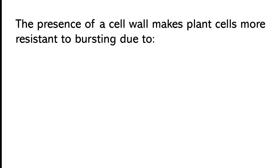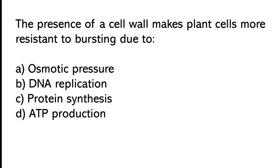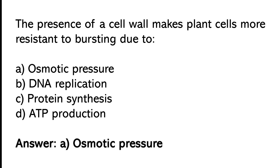The presence of a seal wall makes plant seals more resistant to bursting due to: osmotic fresher, DNA replication, protein synthesis, or ATP production. The correct answer is option A: Osmotic fresher.